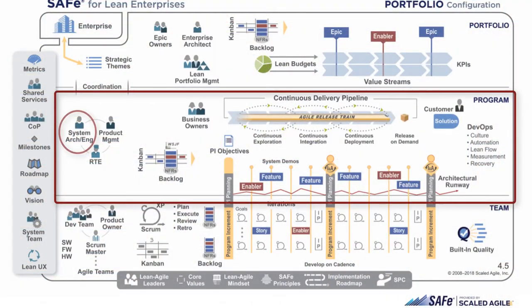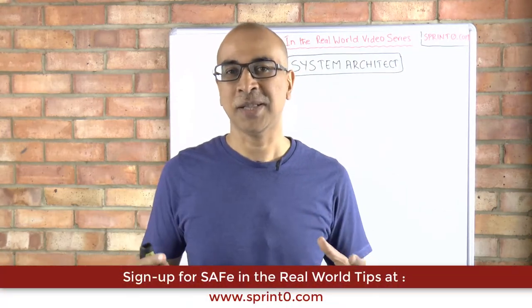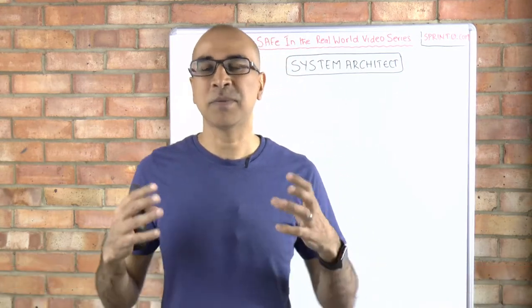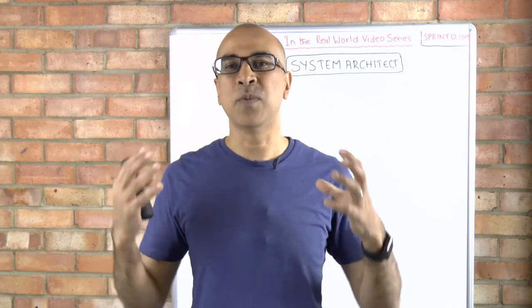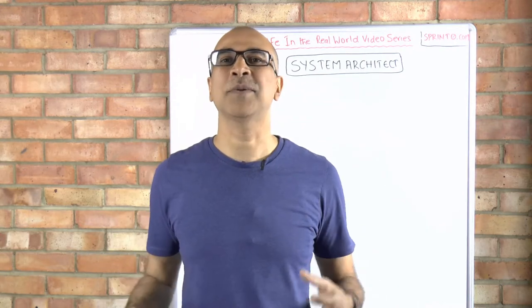The system architect sits at the program tier on the SAFE big picture and is shown as a trio of key program roles, as he or she is going to need to work really closely with the release train engineer and the product manager. The release train engineer supports, facilitates, and enhances all that cross-team communication to enable the agile release train to deliver on its commitments, and the product manager defines what, when, and why the agile release train does what it is supposed to be doing.